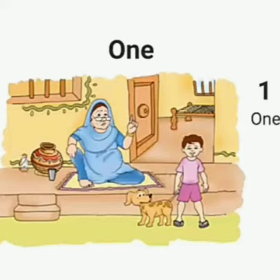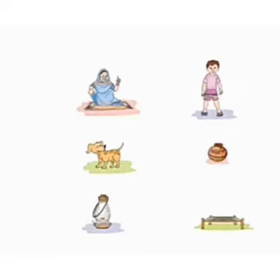Can you see the things in the picture? Until 1 grandma, 1 boy, 1 pot, 1 cart, 1 dog and 1 letter.